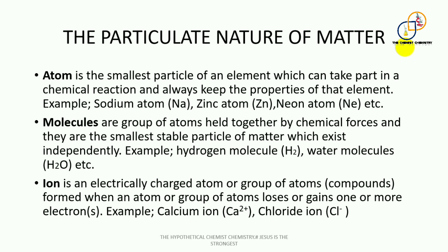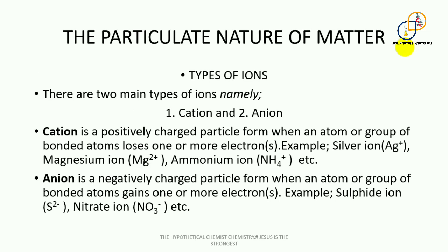When an atom or group of atoms loses an electron or electrons, an ion is formed. Likewise, when an atom or group of bonded atoms gains one or more electrons, an ion is also formed. So we have an ion forming as a result of loss of an electron, and an ion forming as a result of gain of an electron. This leads us to the two main types of ions: the cation and the anion.